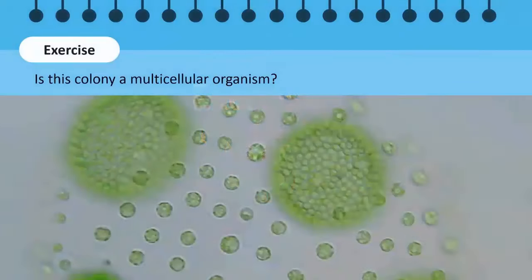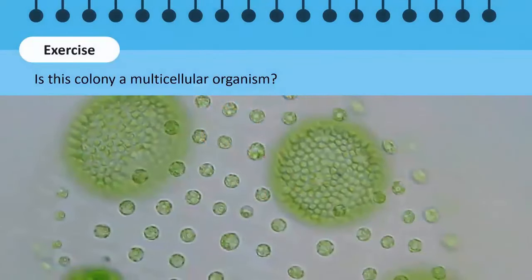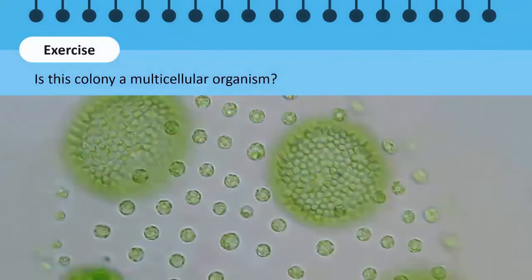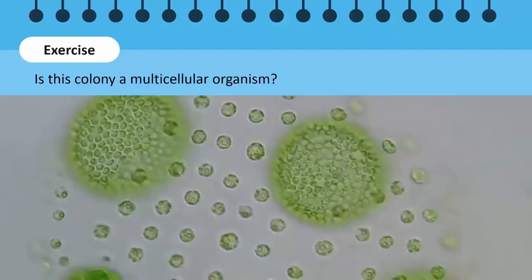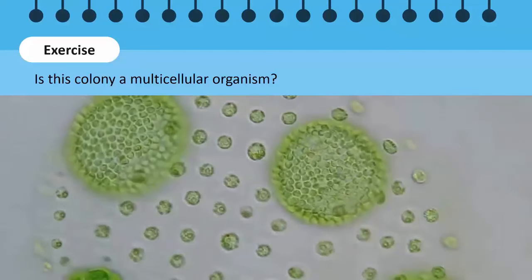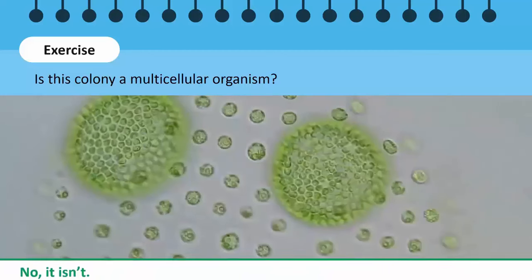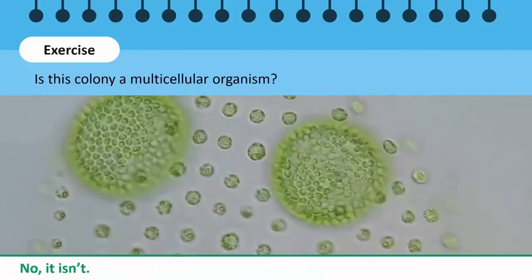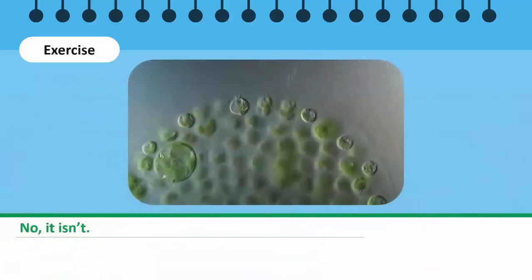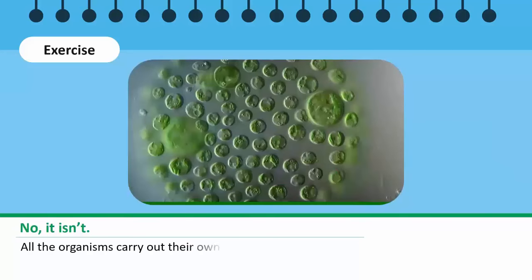If a group of unicellular organisms are living and working together as a colony, is this colony a multicellular organism? No, it isn't. A unicellular organism can carry out all life processes on its own.